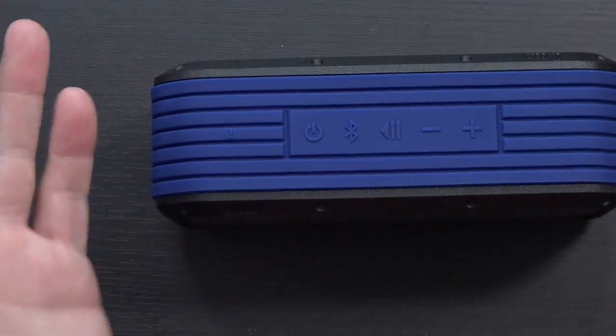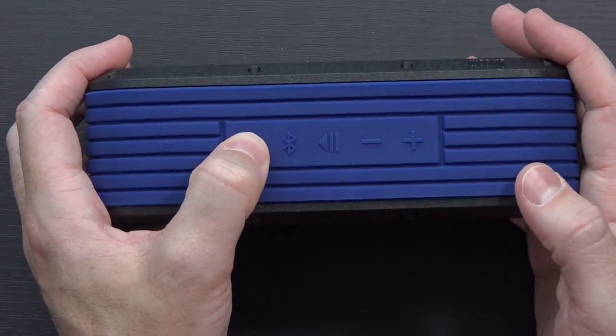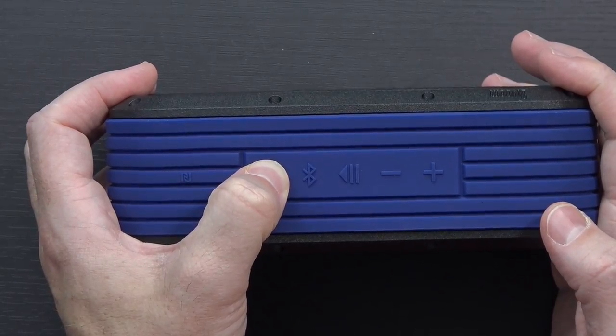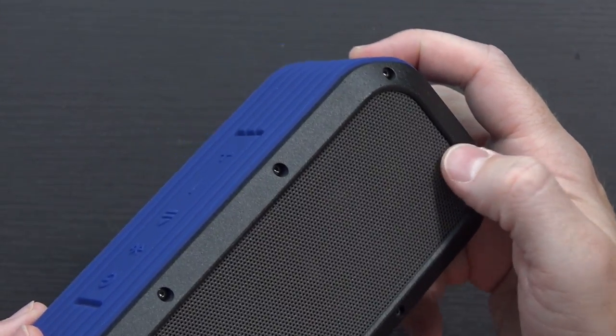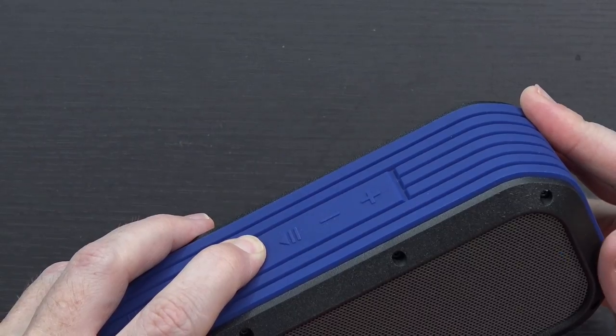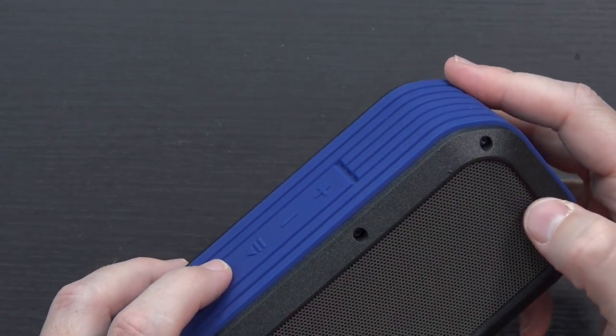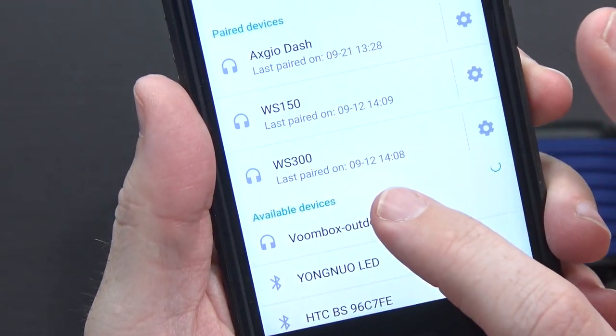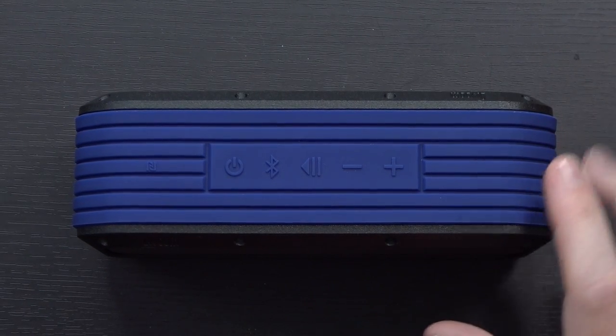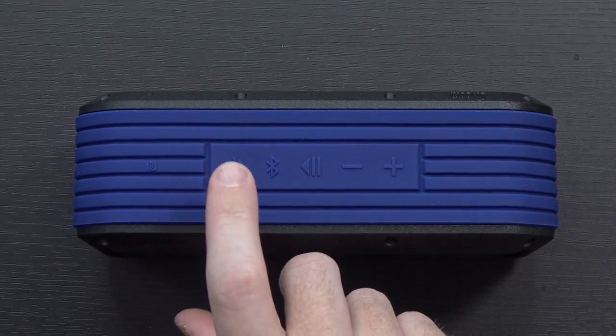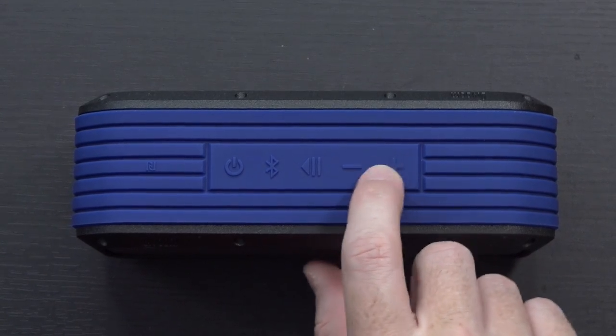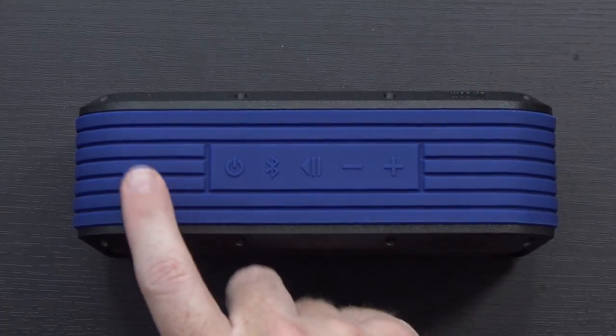Nothing on the other end, nothing on the bottom except for some more branding, model number, five volt one amp input, and then speaker grills on both sides for that 360 degree output. Let's go ahead and power this on, get it paired up to a phone, see how it sounds. I do see a blue LED in here. And I had tapped the Bluetooth button and it's now flashing. And right there you see it, Vooom box outdoor. In terms of the other buttons, you've got power, Bluetooth, play pause, plus and minus so volume up and down.